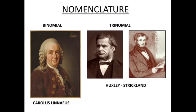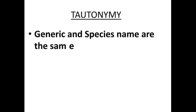For example, in the binomial system two names are used: Homo sapiens — Homo is the genus name and sapiens is the species name. In the trinomial system, for example the Indian house crow: Corvus splendens splendens — Corvus is the genus name, splendens is the species name, and the second splendens is the subspecies name.